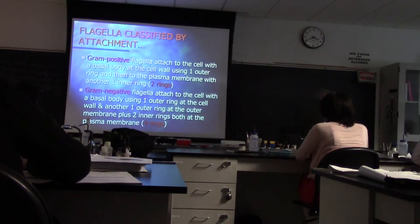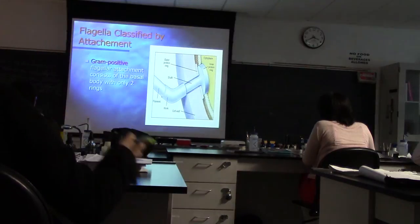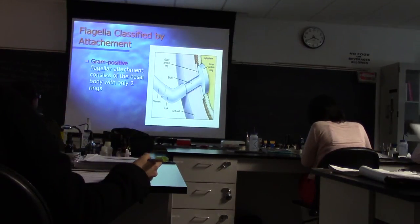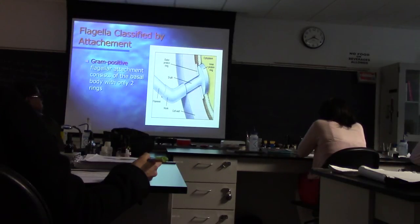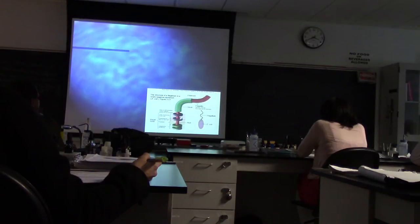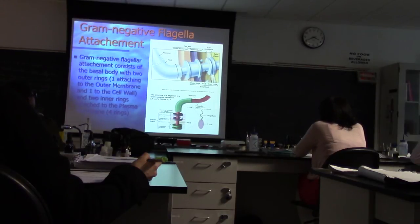So the anchors for the flagella — how do you know it's gram-positive? It just has two anchors: one in the plasma membrane, one between the plasma membrane and the cell wall. Gram-negative has four: one between the cell wall and the outer membrane, and one in the outer membrane.